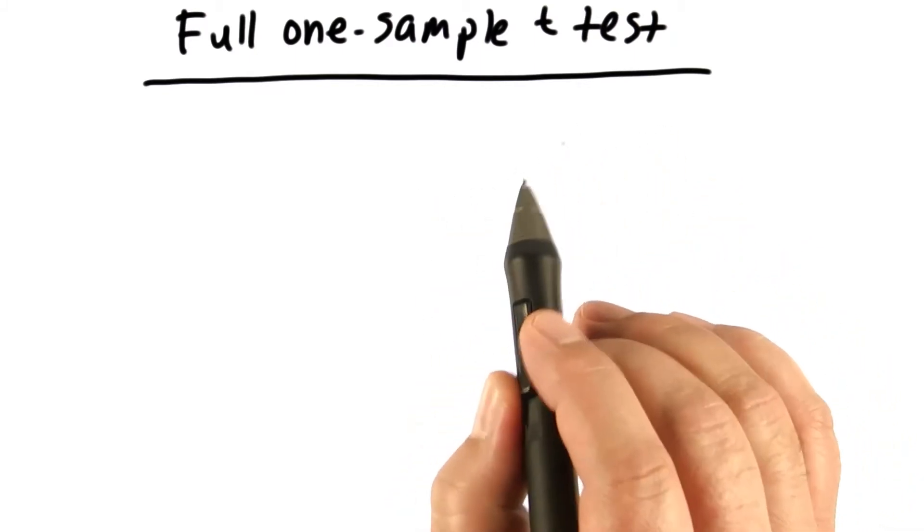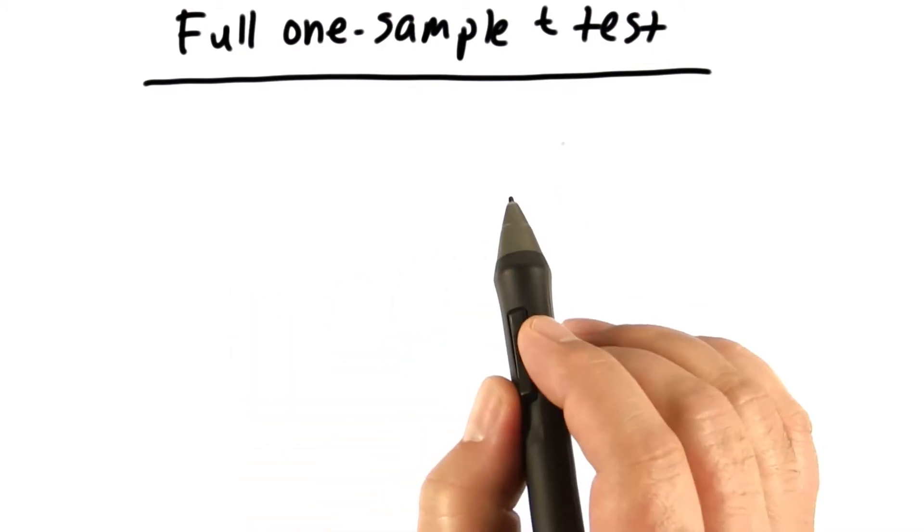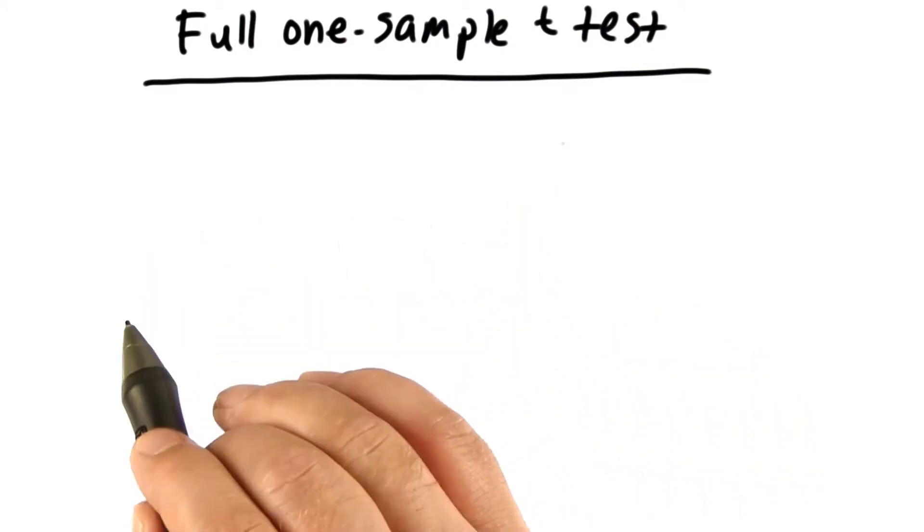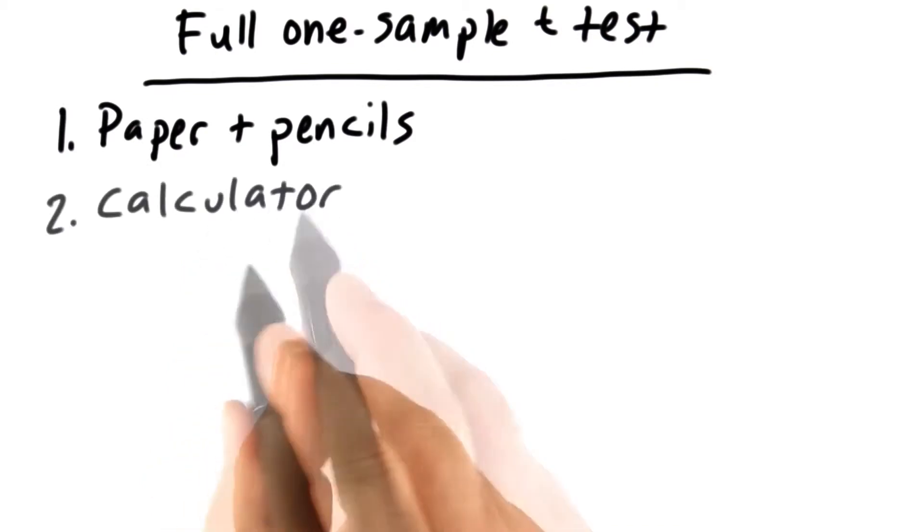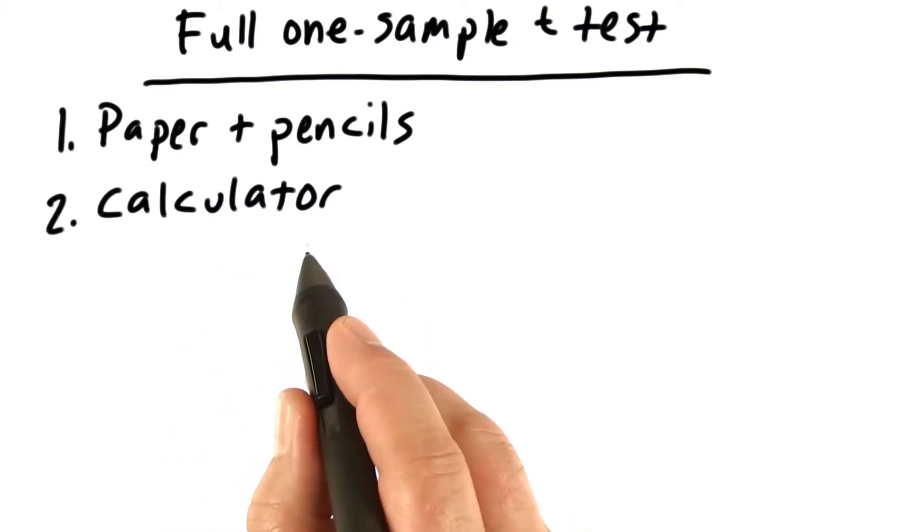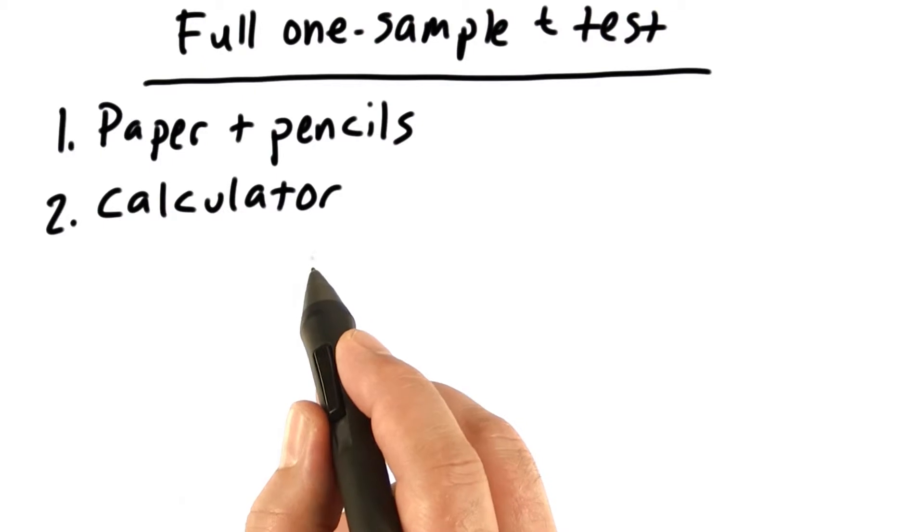Before we do, it's important for you to gather some important information and tools. I'm going to list these tools and information right here. Be sure you get them. You'll need some paper and pencils. You'll also need a calculator that has a square root and an exponent button.